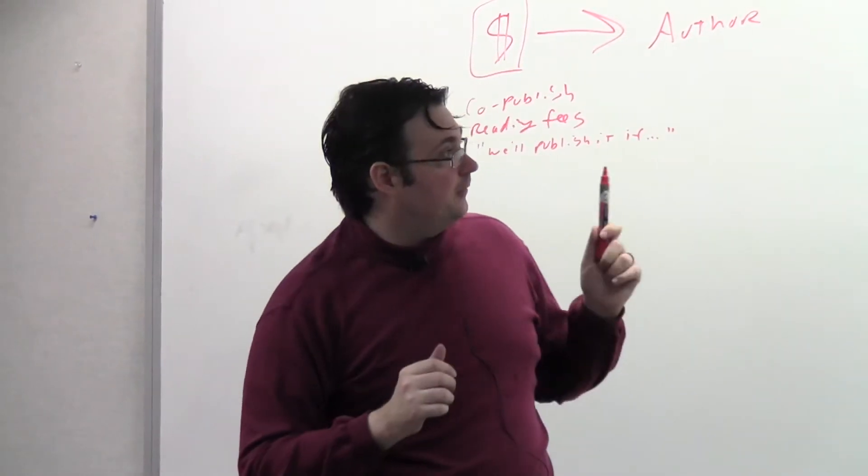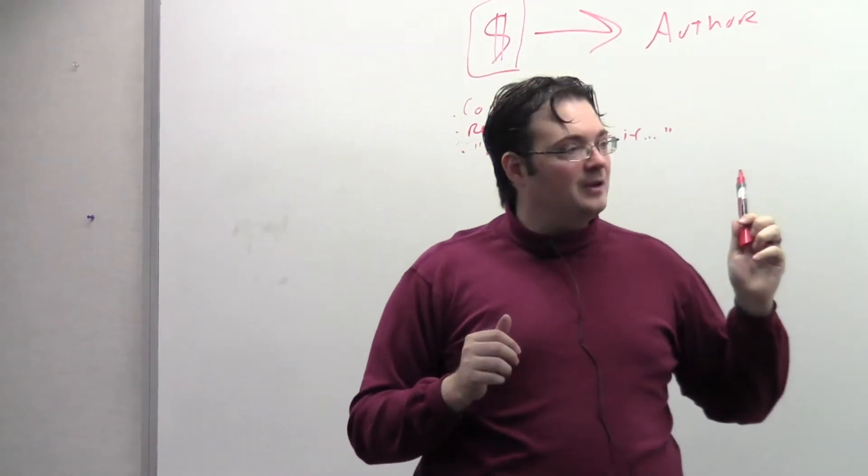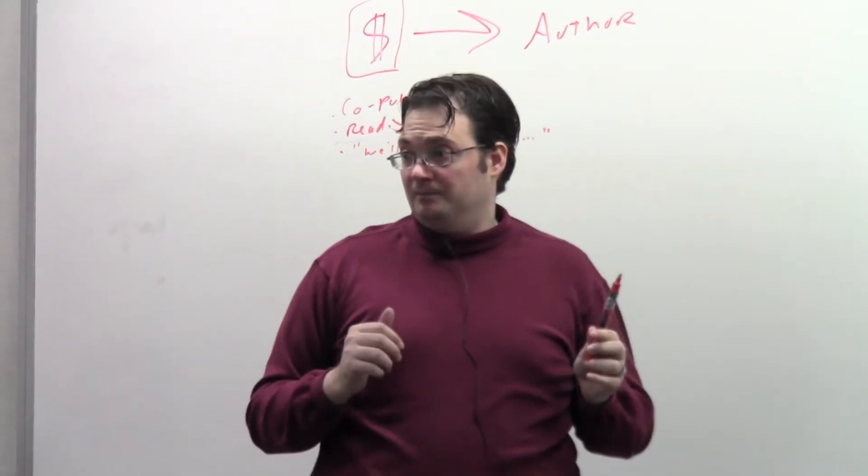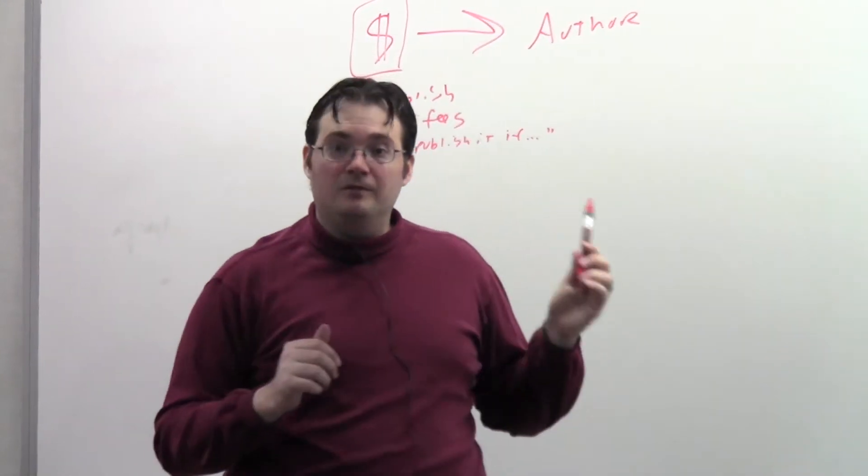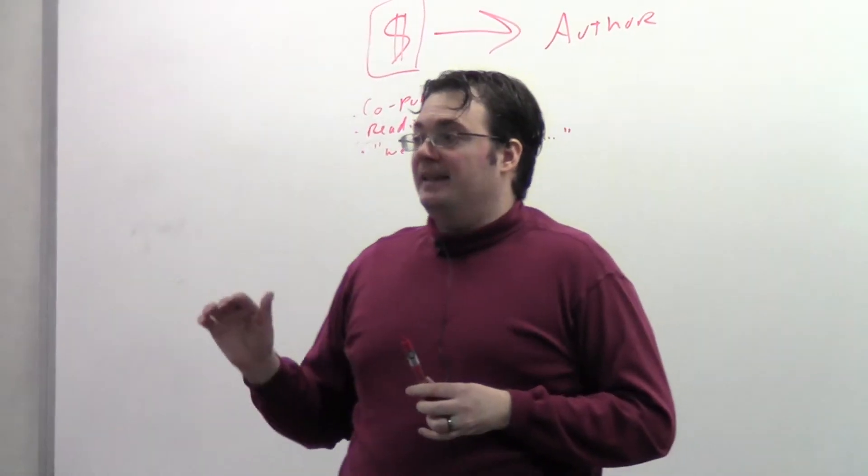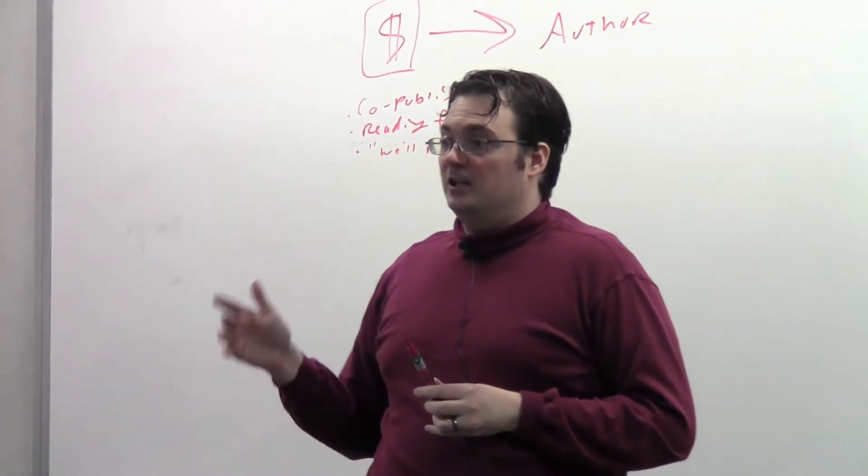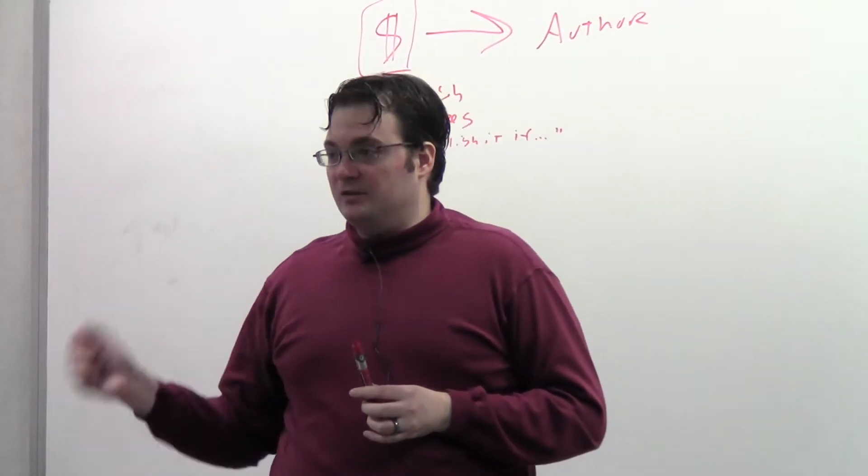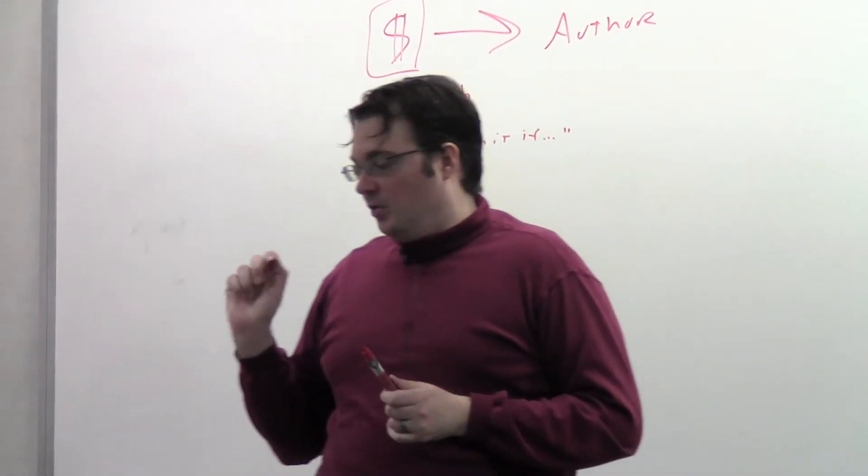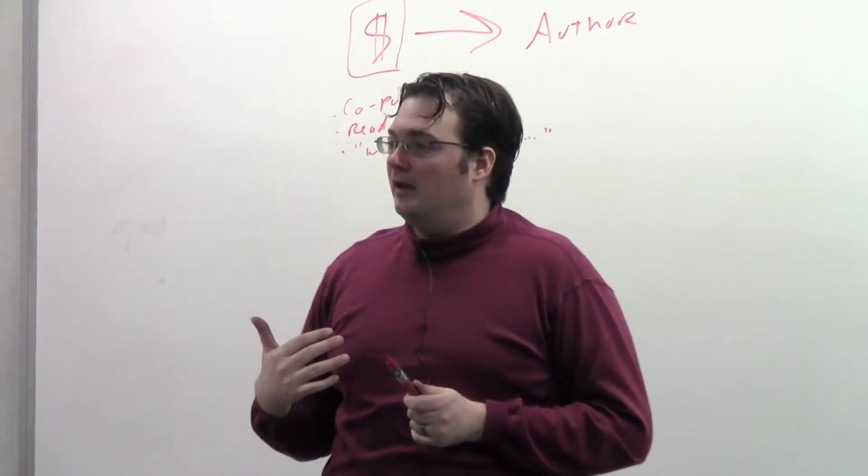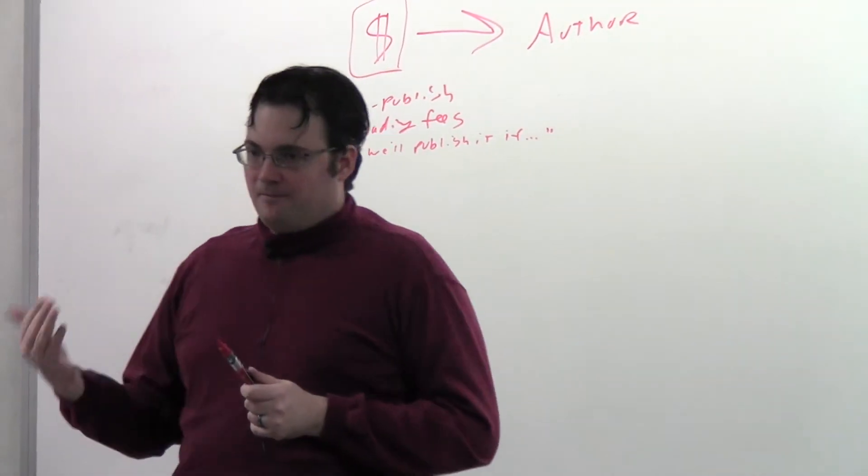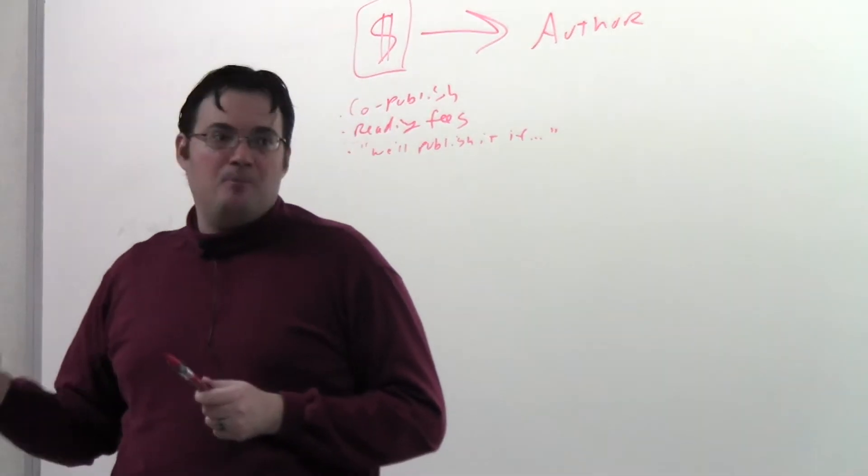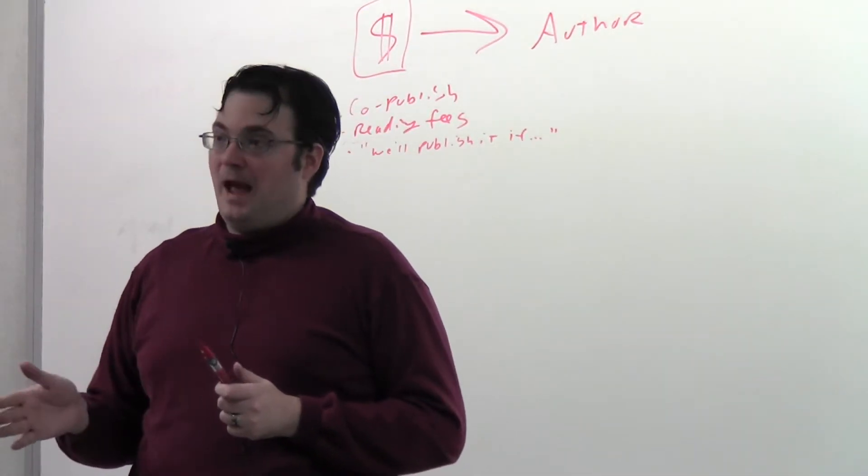Second piece of a right of first refusal clause is usually I am not allowed to take less from another publisher for it. For instance, if Tor offers on it, I can't then go and sell it to someone else for less money. I can say no, that deal isn't good enough, and go sell it to someone else for more money. You will often see in rights of first refusal clauses things that say if you go to someone else and they offer more, we have a chance to beat that price by a certain amount, or to match it or beat it.